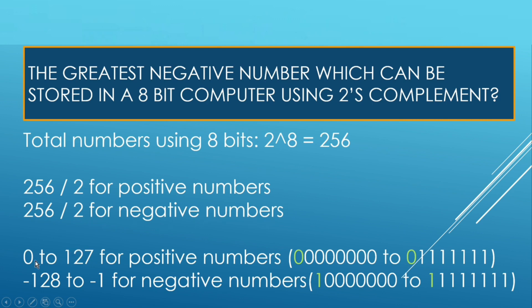So from 0 to 127 are used for positive numbers — 0 to 127. This 0 at the MSB place represents the sign bit. Now the other half numbers are used for minus 128 to minus 1.